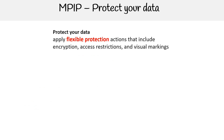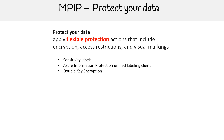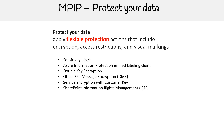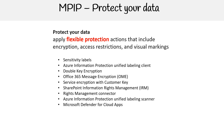The second part is Protect Your Data: apply flexible protection actions that include encryption, access restrictions, and visual markings. Features here include Sensitivity Labels, Azure Information Protection Unified Labeling Client, Double Key Encryption, Office 365 Message Encryption, Service Encryption with Customer Key, SharePoint Information Rights Management, Rights Management Connector, Azure Information Protection Unified Labeling Scanner, Microsoft Defender for Cloud Apps, and Microsoft Information Protection SDK. Most of these you won't need to know, but we'll definitely cover Sensitivity Labels.